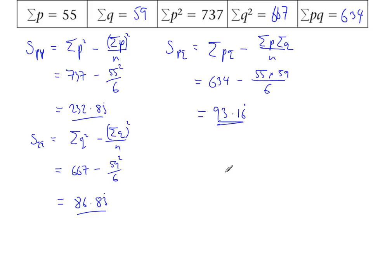That's three bits of information that I need to work out r. So r is Spq divided by the square root of Spp times Sqq.